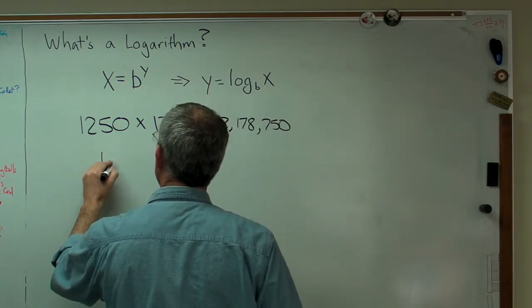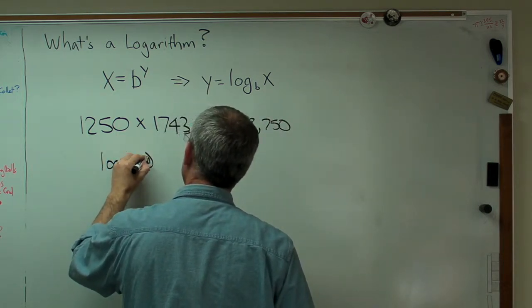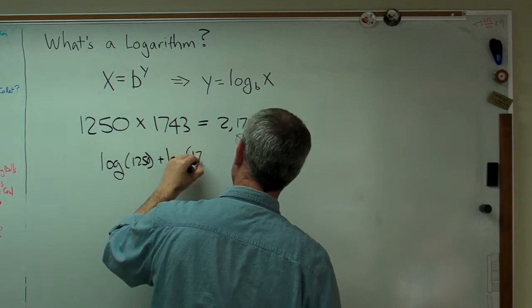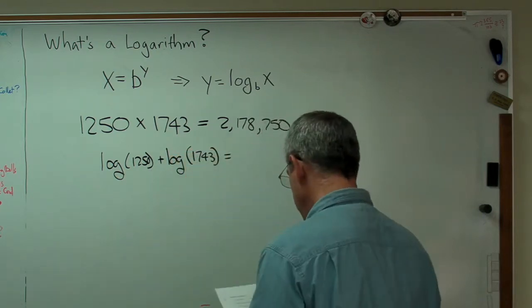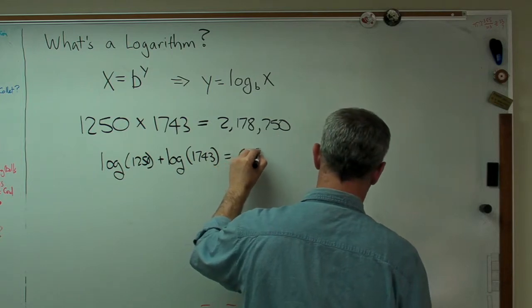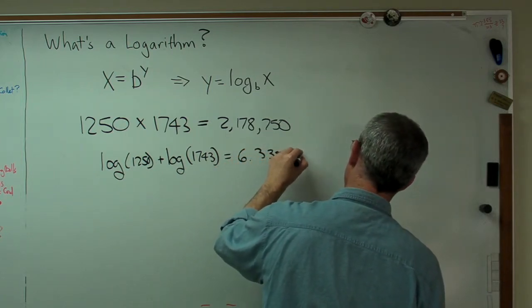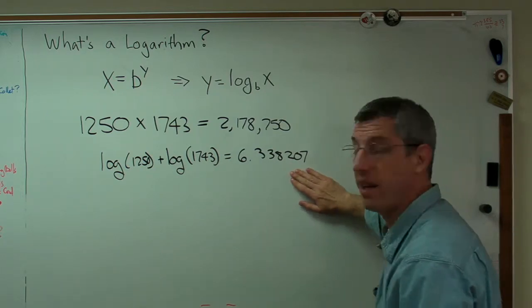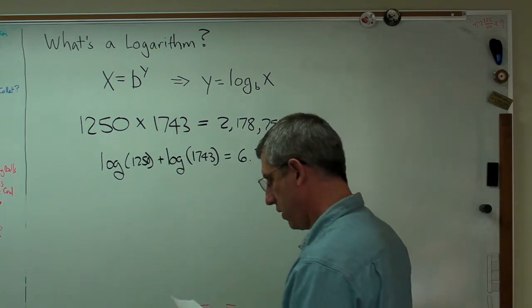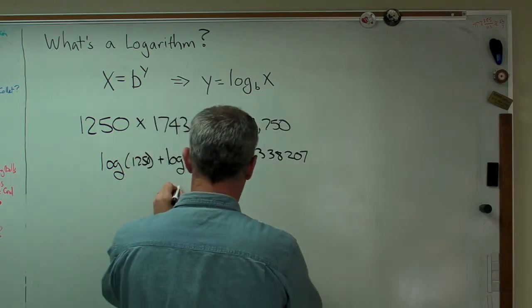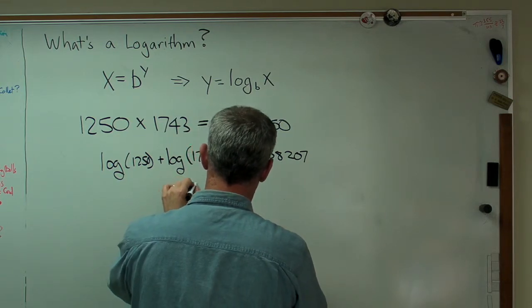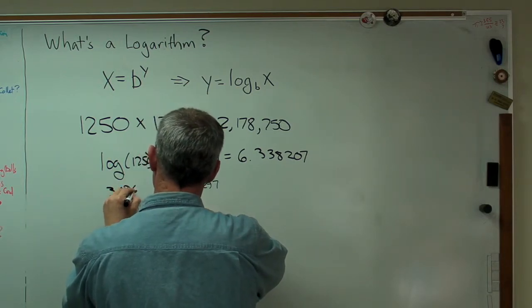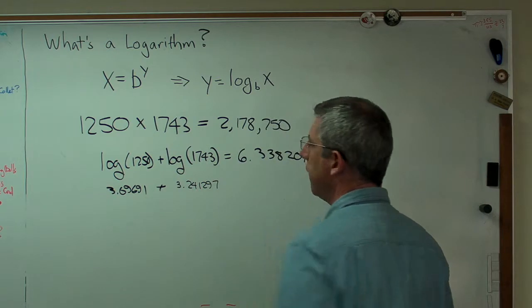So if I say log 1250 plus log 1743, what I'm going to find out is you add those two up and you get 6.338207. Now, there's a reason I'm going to so many decimal places. It actually is going to kind of matter here. This number, just for completeness, that number is 3.241297, and that number is 3.09691. That's how I got that.